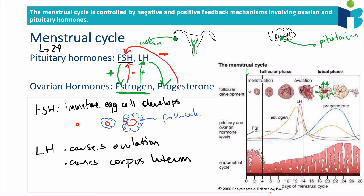The cycle then restarts: FSH stimulates estrogen, which blocks FSH; estrogen also triggers LH, which triggers progesterone; and progesterone blocks FSH, keeping the cycle going. Key things to remember are which hormones come from the pituitary versus the ovaries, which hormones do positive or negative feedback on each other, and why the follicles, the endometrium, and pituitary and ovarian hormone levels change throughout the cycle.